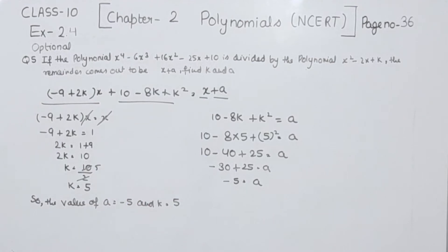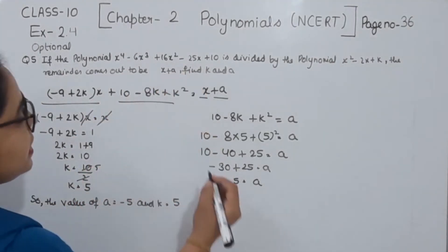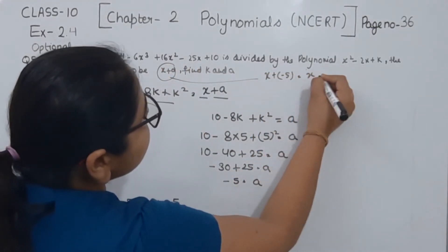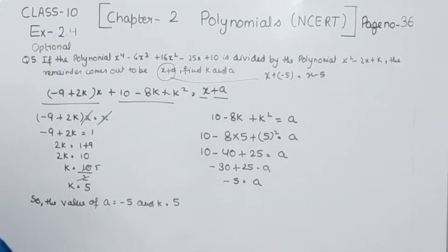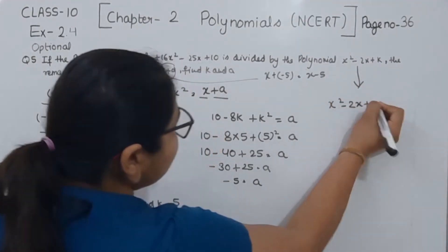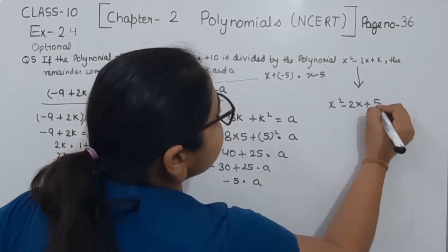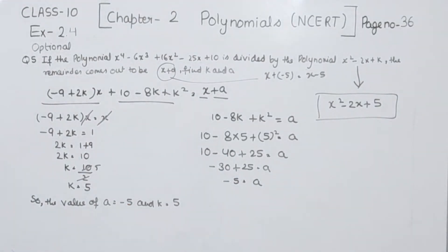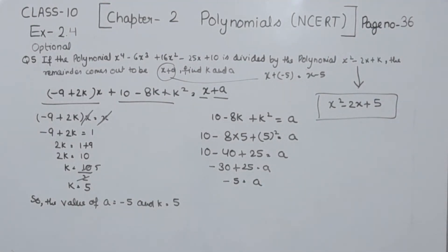So the value of k is 5 and a is minus 5. The remainder is x plus a, which is x plus minus 5, that is x minus 5. The divisor is x squared minus 2x plus 5. With this we have completed question 5 of exercise 2.4 and chapter 2 on polynomials. In the next video we are going to start chapter 3: pair of linear equations in two variables.